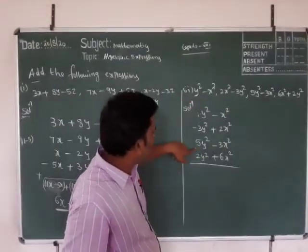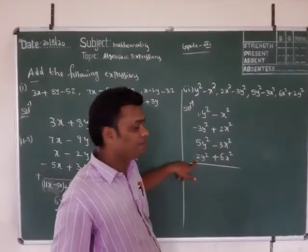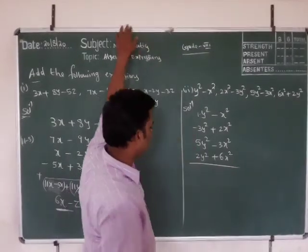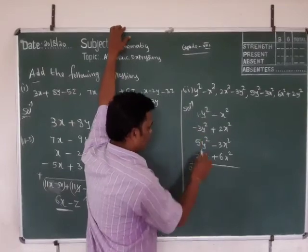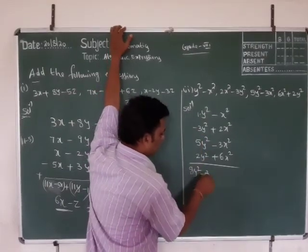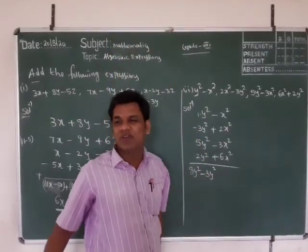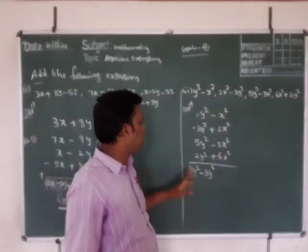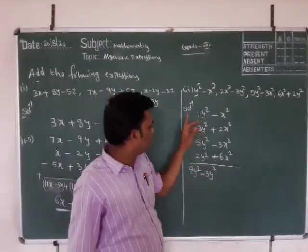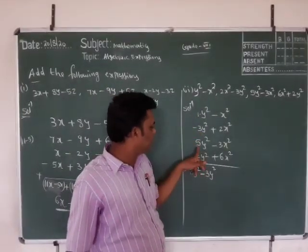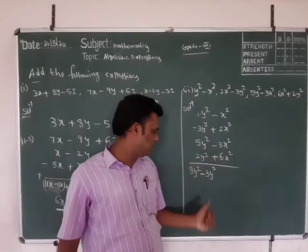Now for x squared coefficients: 1 plus 5 is 6, plus 2 is 8. And for y squared: 8 minus 3. Let's count again: 1, 5 — 1 plus 5 is 6, 6 plus 1 is 7... checking: 1 plus 5 is 6, 6 plus 1 is 8.